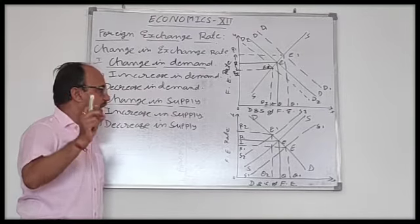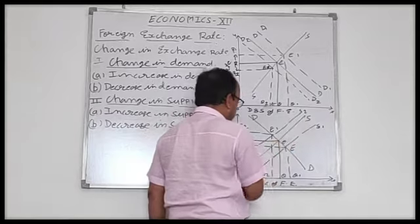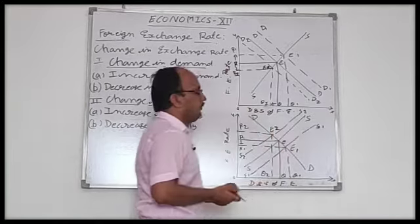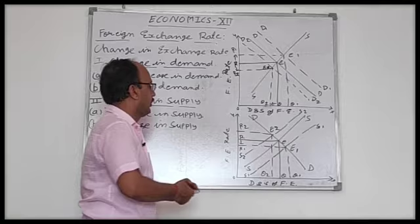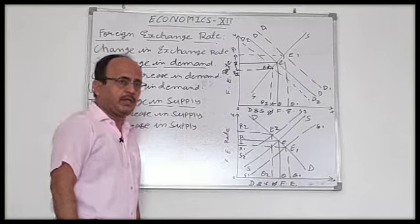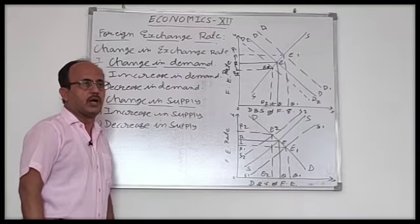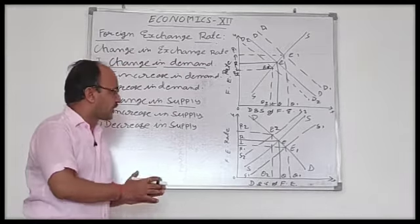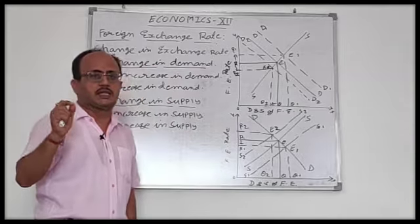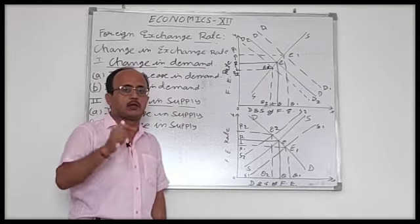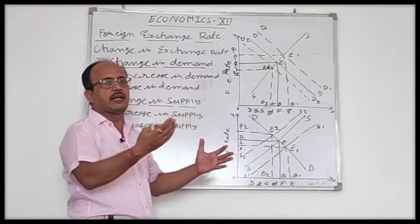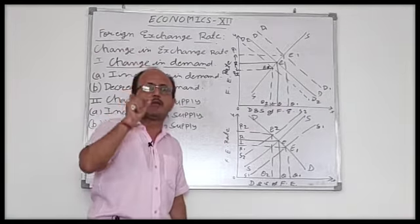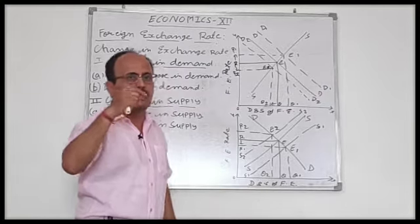Suppose that the supply of foreign exchange increases and the supply curve shifts from SS to S1S1, which intersects the DD demand curve at a new point E1. At this point, foreign exchange rate is reduced from OR to OR1 and equilibrium quantity increased from OQ to OQ1. This shows depreciation of the foreign currency dollar and appreciation of the domestic currency rupee.